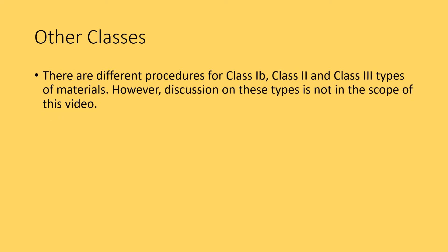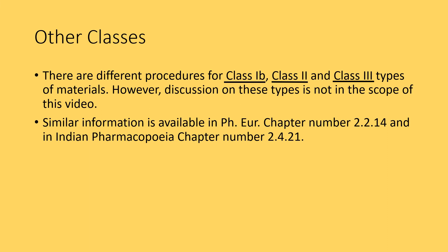There are different procedures for class 1B, class 2, and class 3 types of materials; however, discussion on these types is not in the scope of this video. Since most requirements are encompassed in class 1 or 1A, the focus is limited to these two classes. If there is any special request from users, those procedures will be covered at an appropriate schedule. Similar information is available in European Pharmacopeia chapter 2.2.14 and Indian Pharmacopeia chapter 2.4.21.